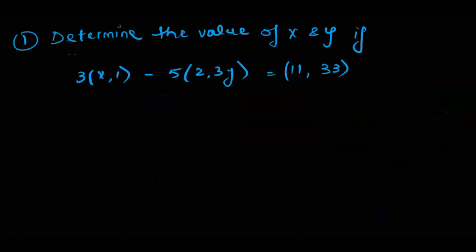Let's do a problem related to this. We have to determine the value of x and y. If we are given 3(x, 1) minus 5(2, 3y) is equal to (11, 33). Now we know this is given in component form or the coordinate form. This is the x value, this is the y value, this is the x value, y value, and this is the x value, y value. So these are technically the vectors and these are the scalars. 3 is a scalar, 5 is a scalar. We do not have a scalar here.